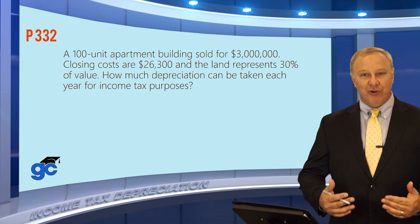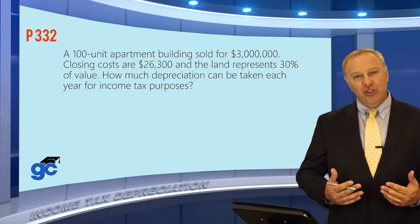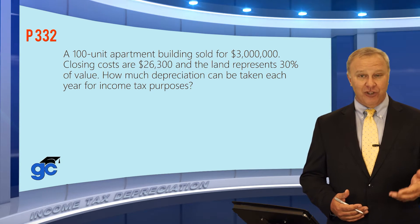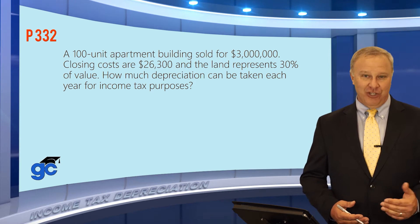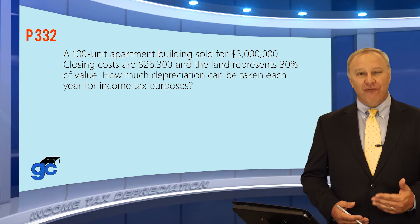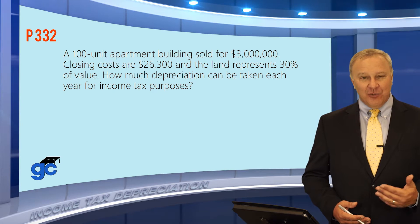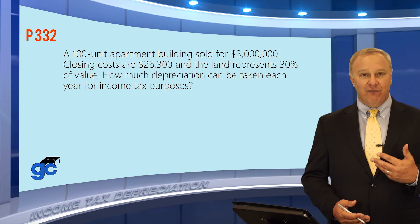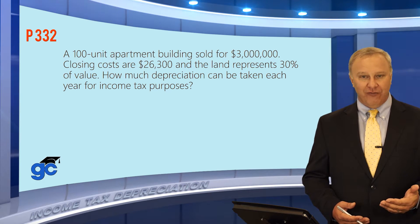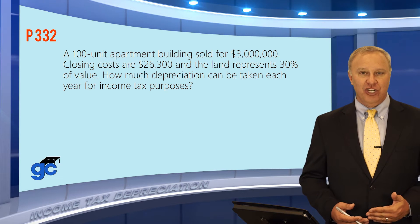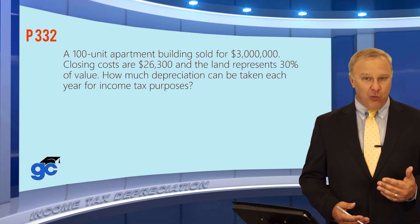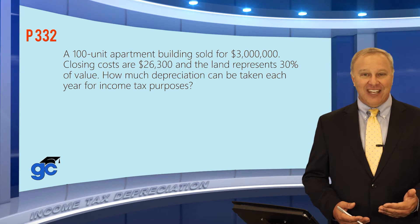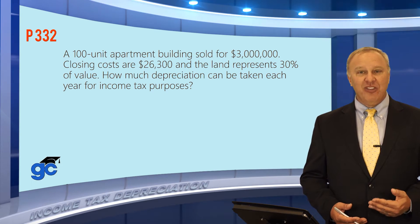In this video we're going to discuss depreciation. There are several different types: depreciation for the cost approach to appraising, and tax depreciation. For this section we're going to focus on tax depreciation. Tax depreciation is taken on a straight-line basis, meaning the property value is divided over a certain number of years. For residential property that time frame is 27.5 years, and for non-residential or commercial/industrial property that straight-line time frame is 39 years.